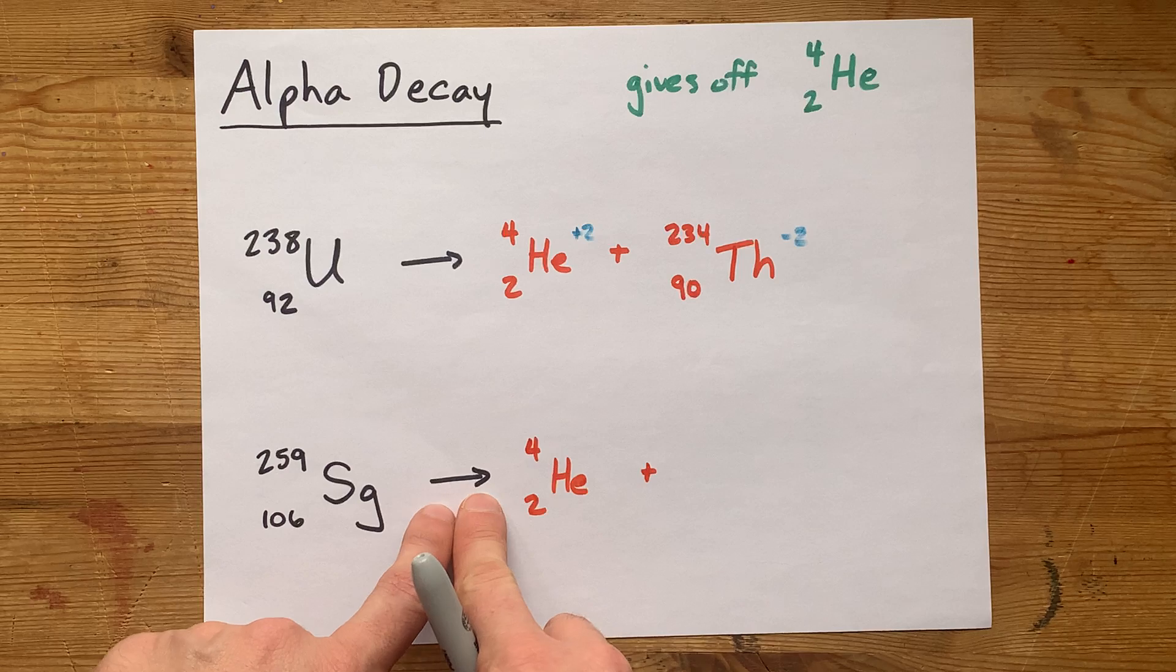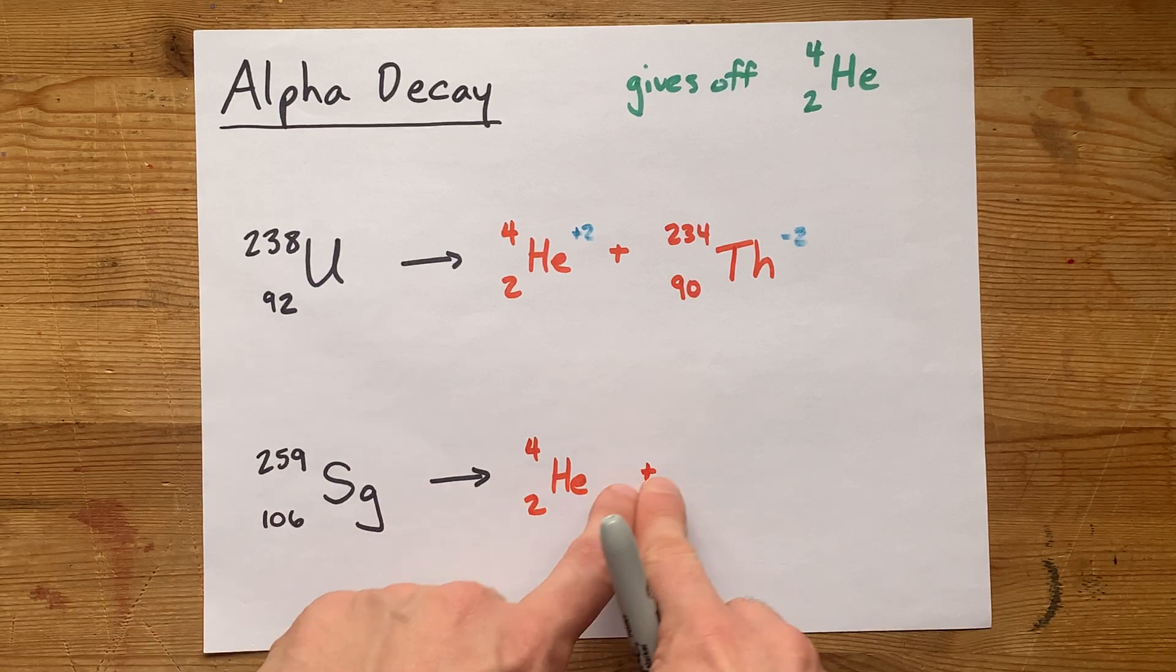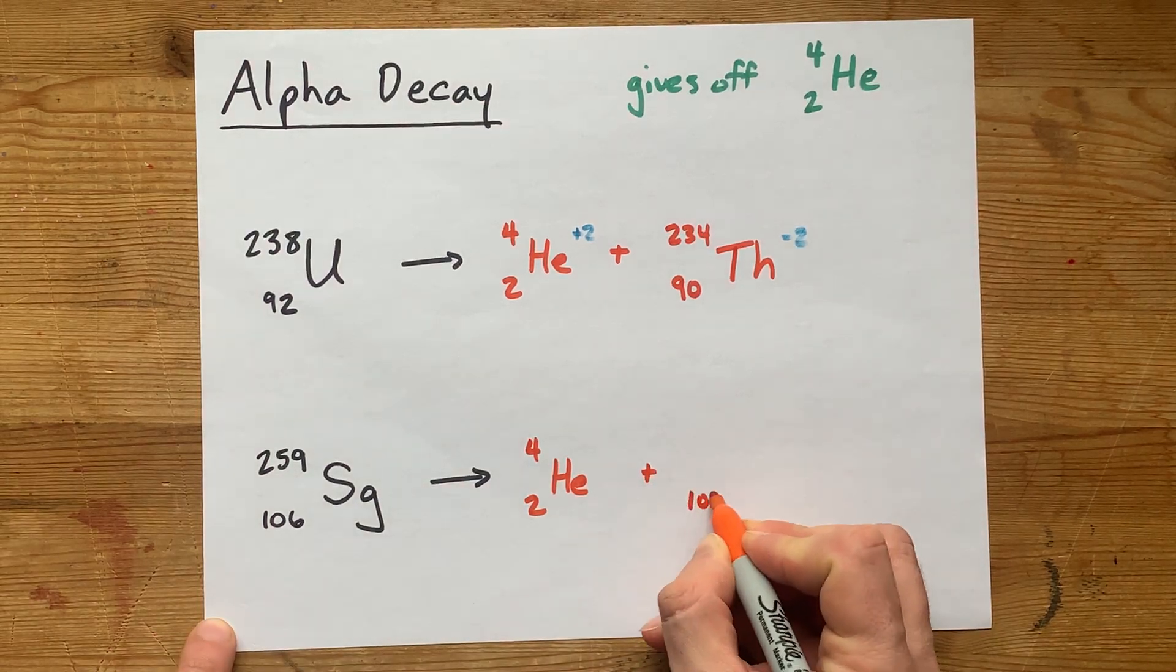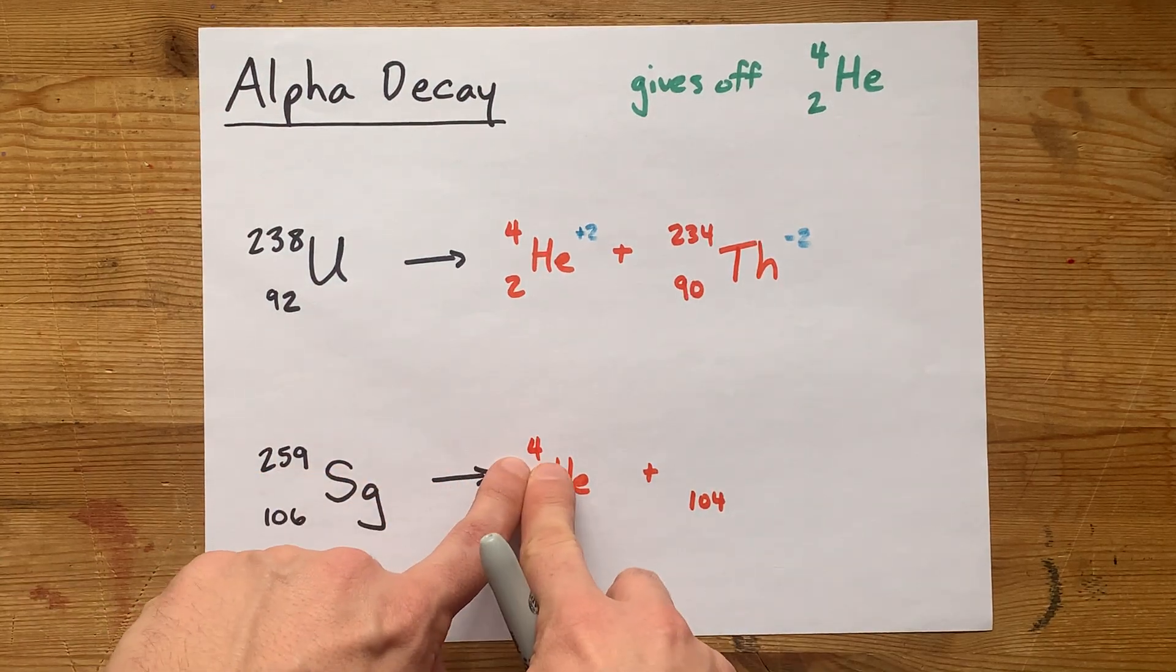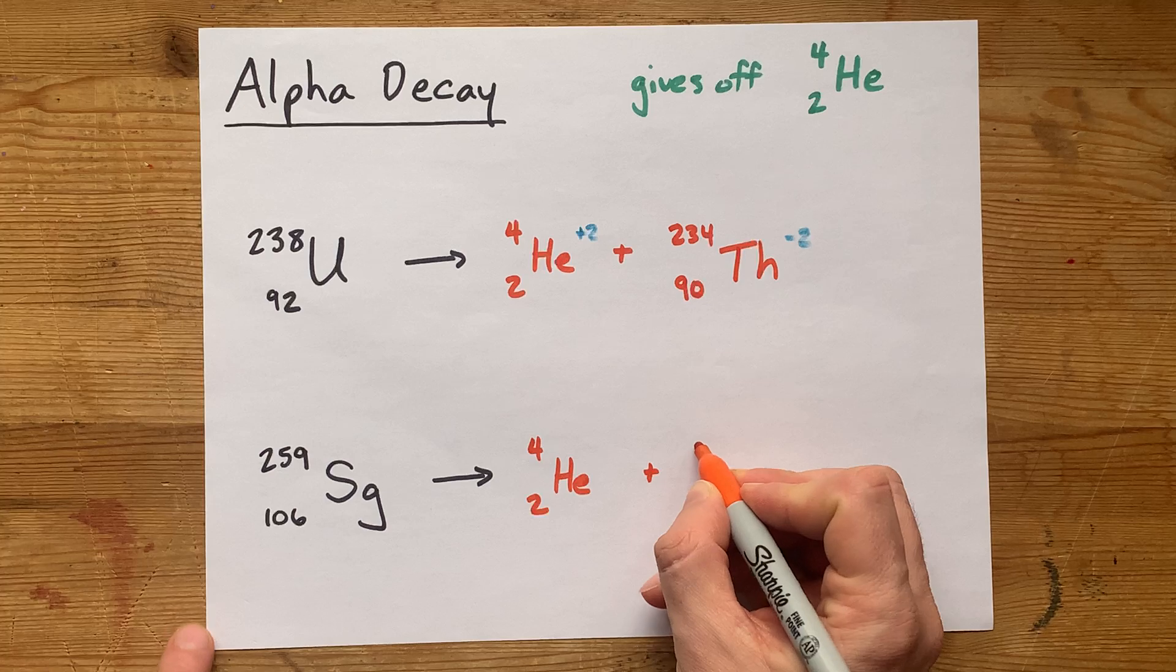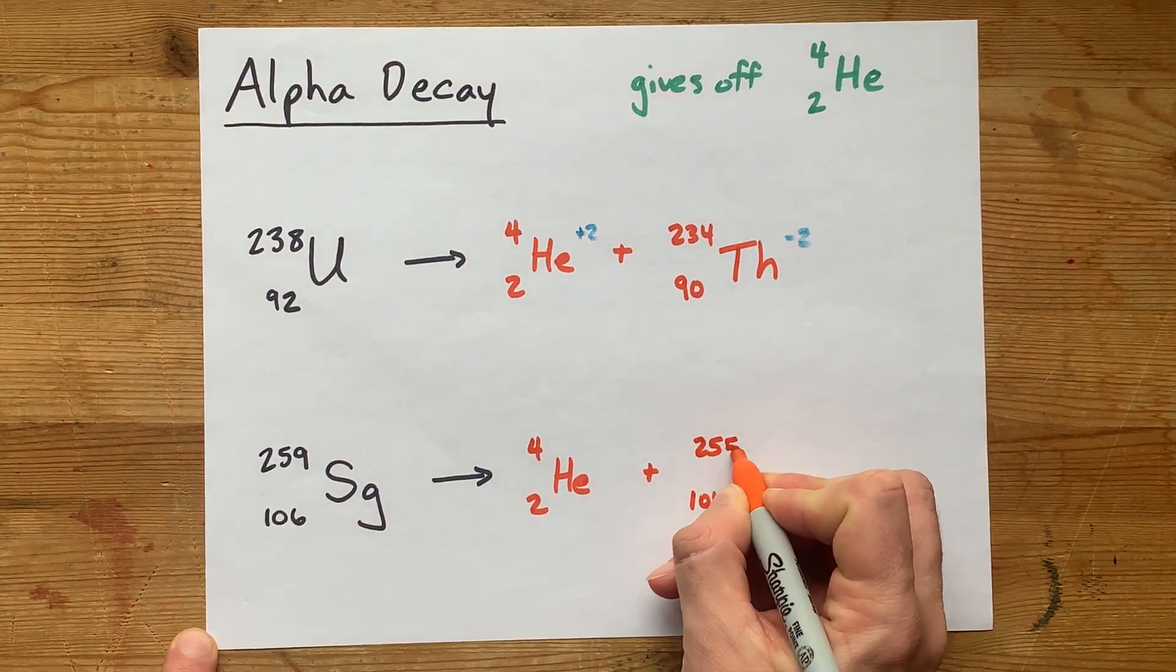106 breaking apart gives 2 plus 104, and 259 breaking apart gives 4 and 255. That's a subtraction. 259 minus 4 gives you that number.